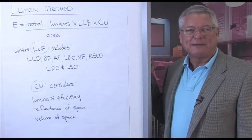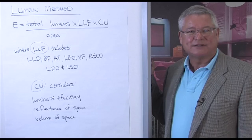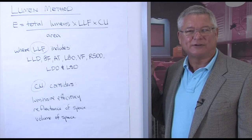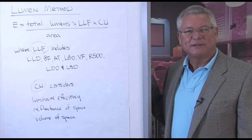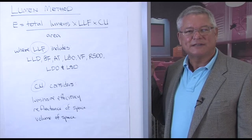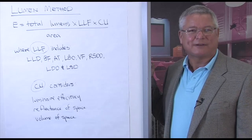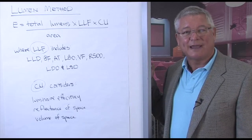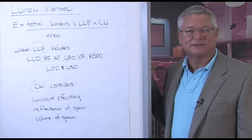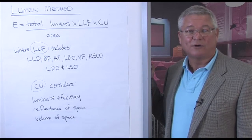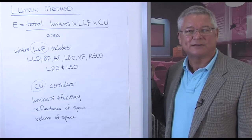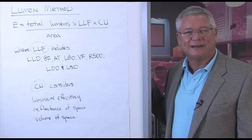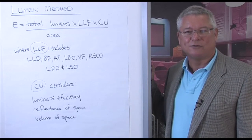In this example, we're using an existing space to describe light loss factors and the coefficient of utilization. But if this space had not been built, the Lumen method of calculation is a very powerful tool for determining how much light we would get from a certain installation, or simply manipulating the equation to figure out how many luminaires we need to provide the target illuminance.